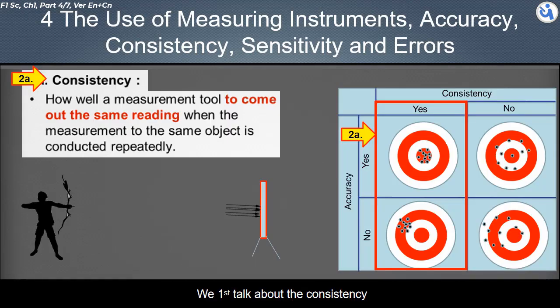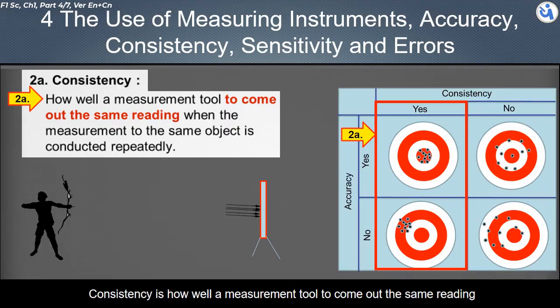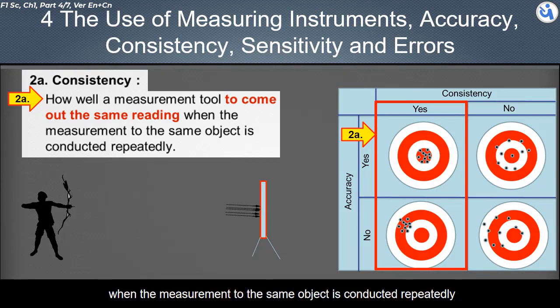We first talk about the consistency. Consistency is how well a measurement tool to come out the same reading when the measurement to the same object is conducted repeatedly.